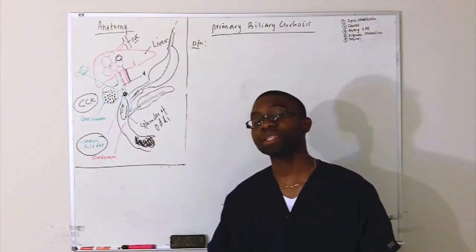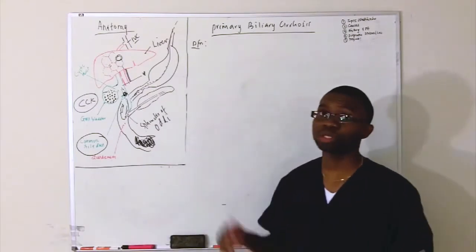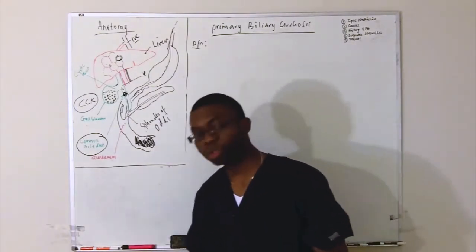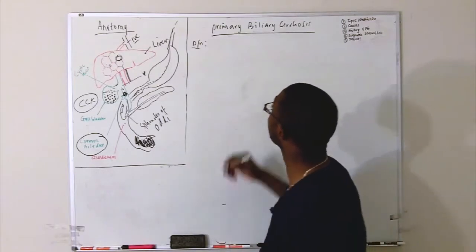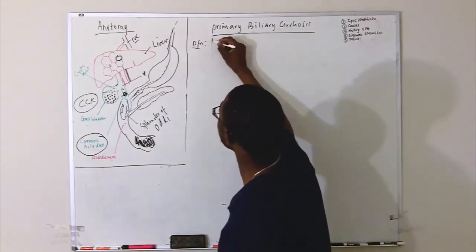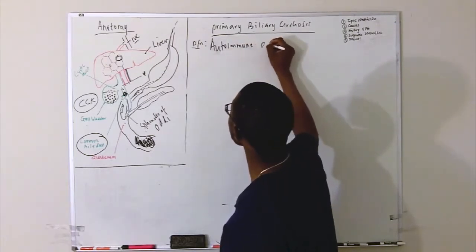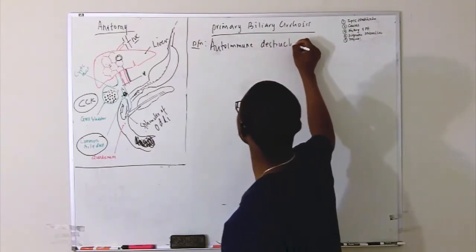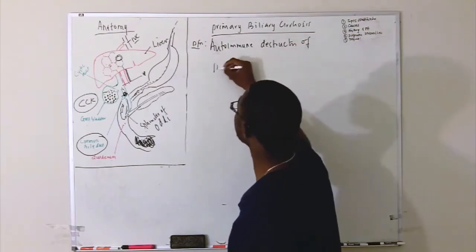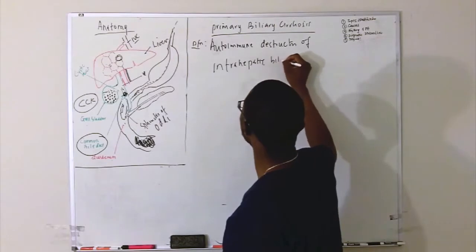Primary basically means we don't really know what's causing it because there are secondary causes of biliary cirrhosis. But the most important thing about the definition is this is an autoimmune destruction of the intrahepatic bile duct.